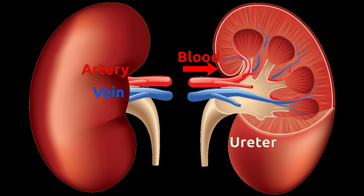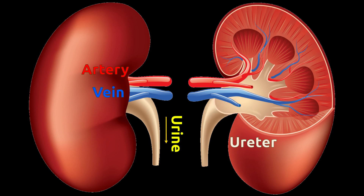Renal arteries take blood inside for purification, and purified blood comes out through renal veins. Waste liquid, also known as urine, goes to the urinary bladder through the ureter.